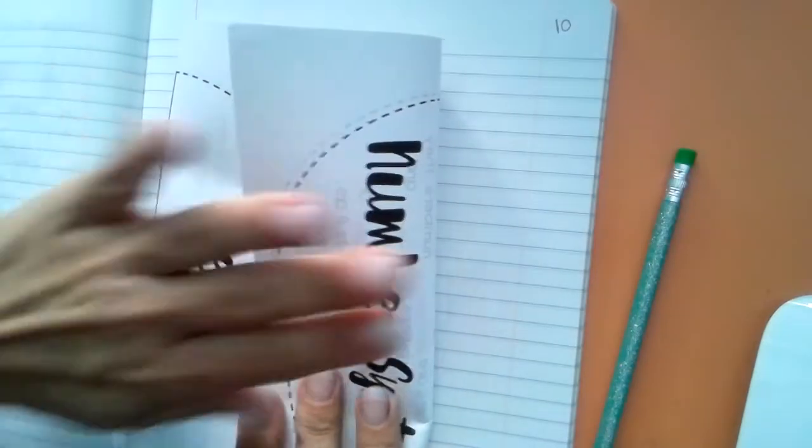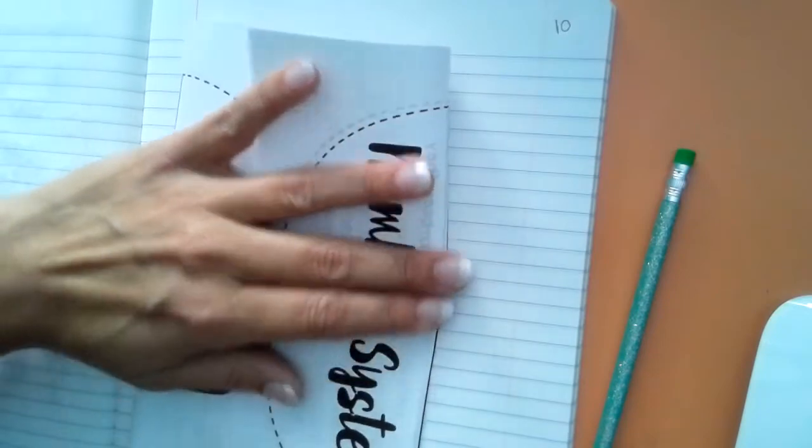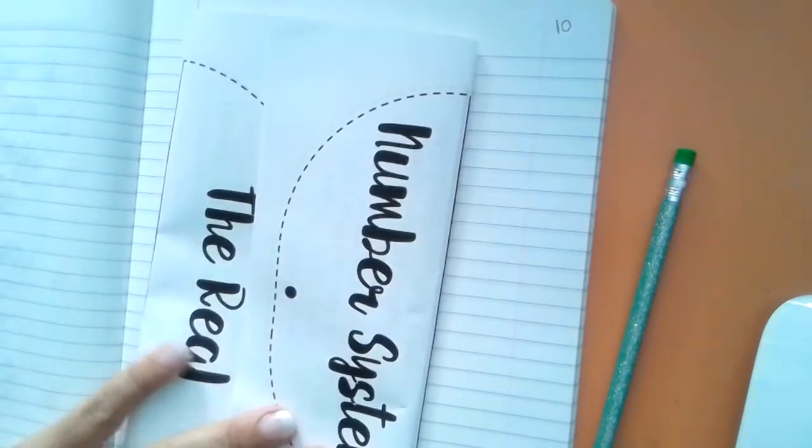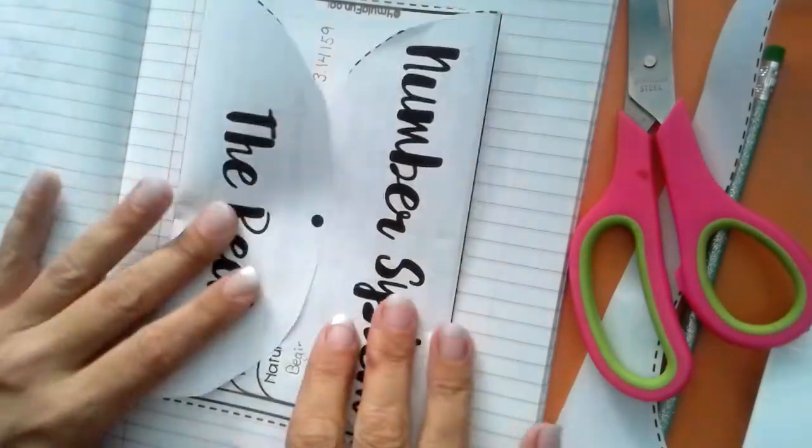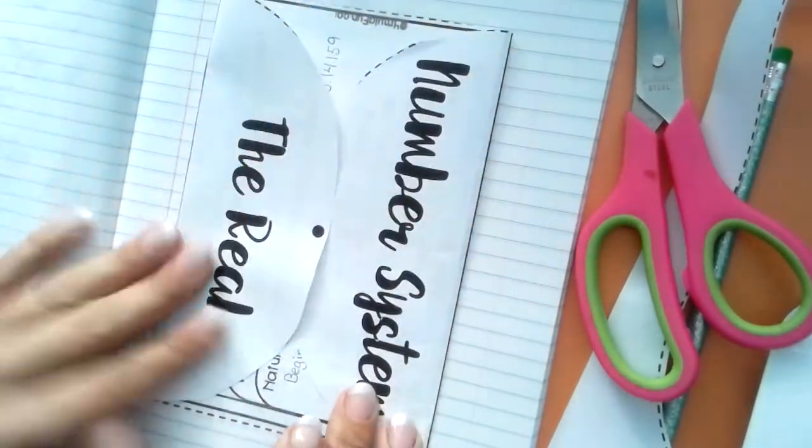So what I'm going to have you do now is to cut this out and then you're going to glue it like this in your journal. So on page 10, it's going to look like this.